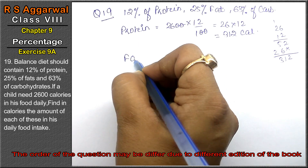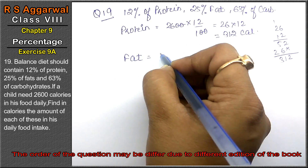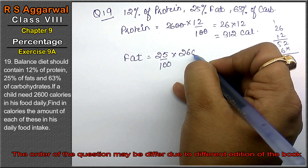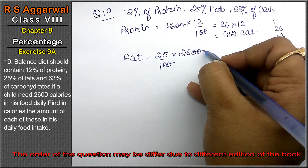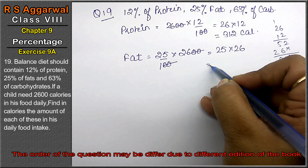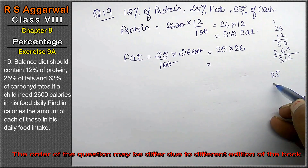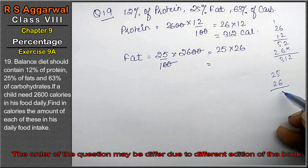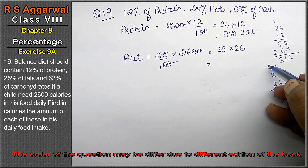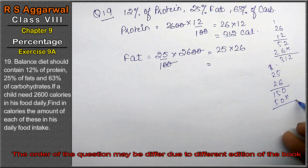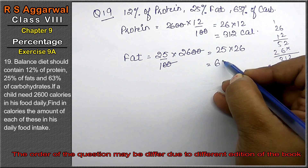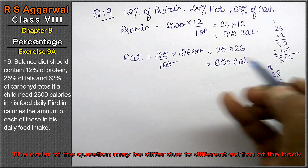Now let's find the fat. Fat was 25% of total calories, and total calories were 2600. So we calculate 25% of 2600, that is 0.25 into 2600. Twenty-five into twenty-six equals 650 calories. So fat is 650 calories.